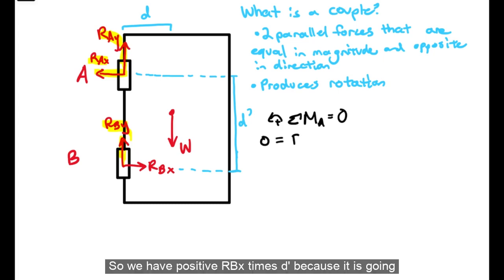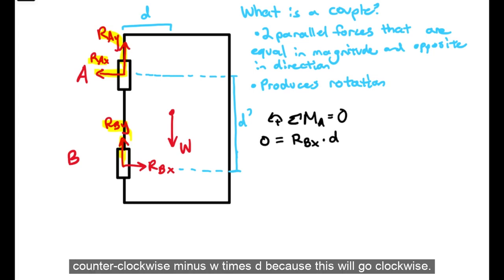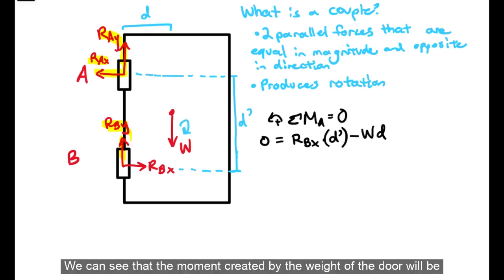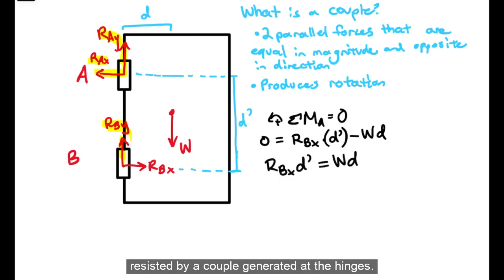So, we have positive RBx times d prime because it is going counterclockwise, minus W times d because this will go clockwise. We can see that the moment created by the weight of the door will be resisted by a couple generated at the hinges. These act to put the system back into equilibrium.